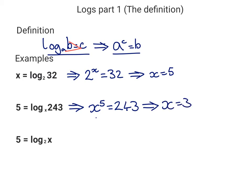And finally, the last type of question that we can do, which is based just on the definition, we end up with 2 to the power of 5 equals X. And we already know from the first question that that means X equals 32.